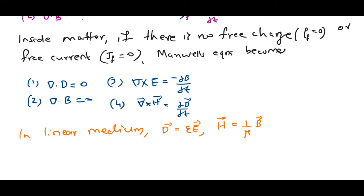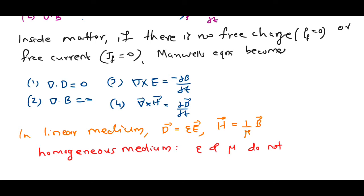Another term we use is homogeneous medium. What is a homogeneous medium? In a homogeneous medium, the permittivity ε and the permeability μ of the medium do not vary from point to point — that is, permittivity and permeability are constant throughout the medium. Such a medium is called a homogeneous medium.